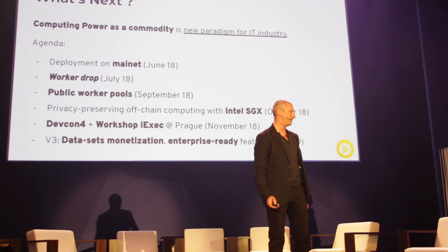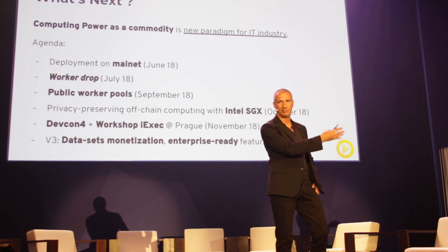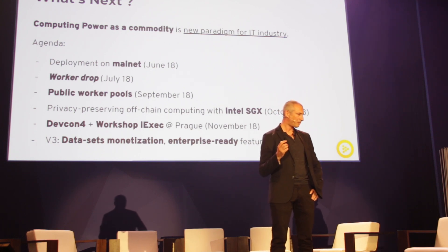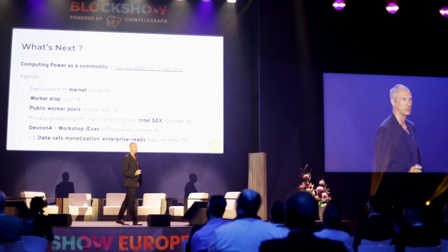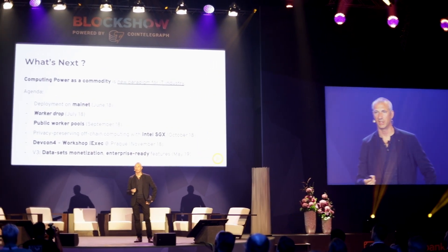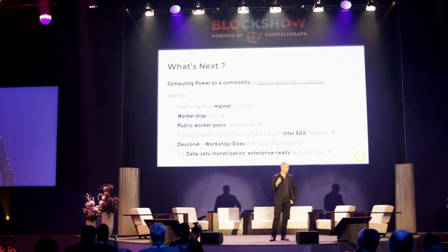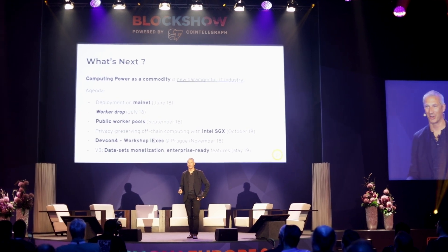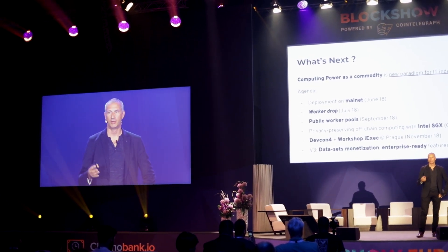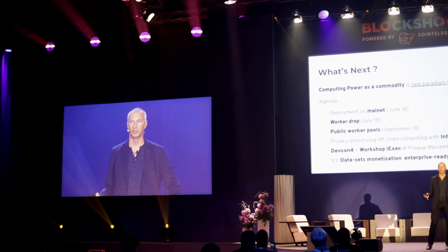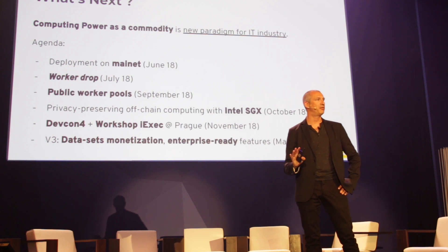The upcoming roadmap is quite exciting. This is now available on the Kovan testnet — you can play with the marketplace right now. GitHub is open as well. We're going to move to mainnet as soon as we feel confident, hopefully in the coming weeks. As soon as it's on mainnet, we're going to do what we call the worker drop — like an airdrop, but for workers. We'll create a worker pool for about 48 hours, launch some tasks, and anyone who connects as a worker to the public worker pool is going to receive some free RLC.